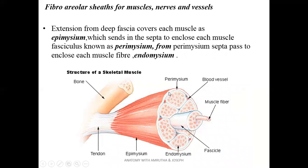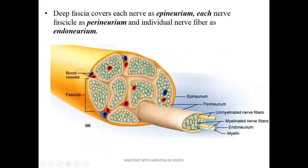Another modification of deep fascia is that it invests muscle on the outer aspect as the epimysium. It also sends septa inside to cover a bundle of muscle fibers as the perimysium, and further sends septa to each individual muscle fiber to form the endomysium. Similarly, deep fascia invests a nerve on the outer aspect as the epineurium, covers a bundle of nerve fibers as the perineurium, and covers each nerve fiber as the endoneurium.